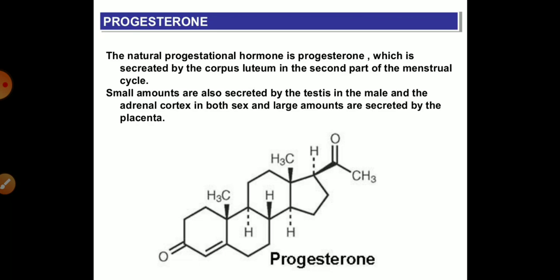Progesterone is a natural progesterone hormone which is secreted by the corpus luteum in the second part of the menstrual cycle. A small amount of this hormone is also secreted by the testis in males and the adrenal cortex in both sexes, and a large amount is secreted by the placenta. This is the structure of the progesterone hormone.